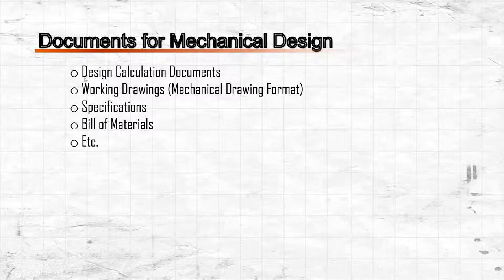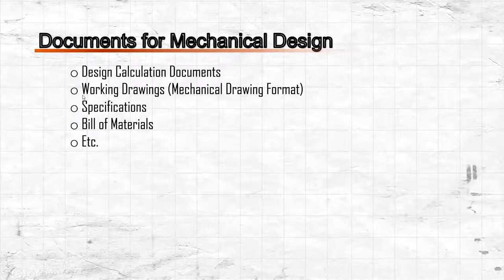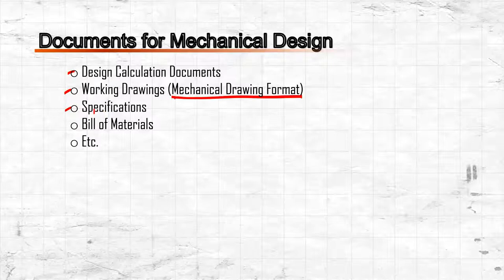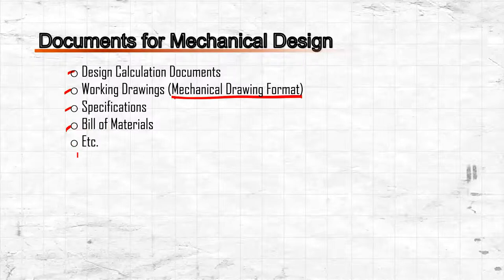Documents for mechanical designs include computation documents for sizes — which can be computer-generated or done manually in this course. We also have working drawings, which use mechanical drawing format rather than structural engineering format. Specifications are used for information that cannot be expressed in drawings, such as workmanship requirements. Another document is the bill of materials.